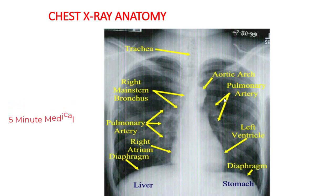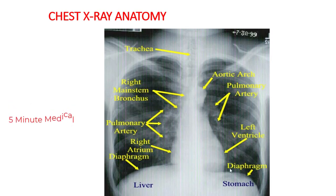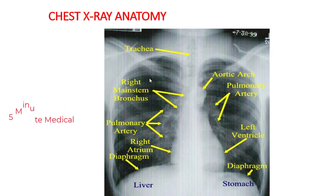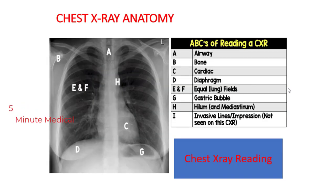Then the pulmonary artery, left ventricle, right ventricle, diaphragm, liver, and stomach — these structures are usually seen in a chest X-ray. There is a mnemonic that is very interesting for reading a chest X-ray: A for airway, B for bones, C for cardiac shadow, D for diaphragm, E and F for equality of both lung fields, G for gastric bubble.